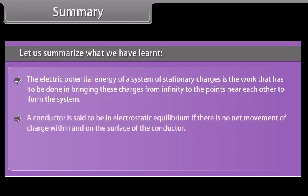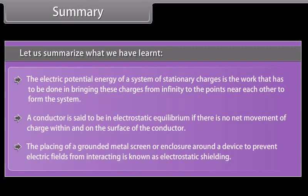A conductor is in electrostatic equilibrium if there is no net movement of charge within or on its surface. The placing of a grounded metal screen or enclosure around a device to prevent electric fields from interacting is known as electrostatic shielding.